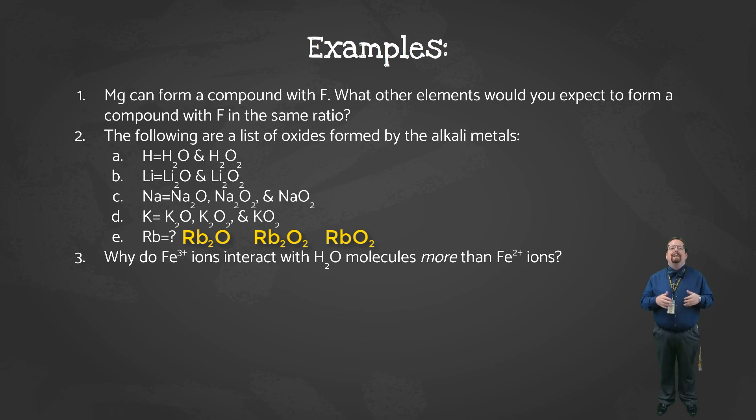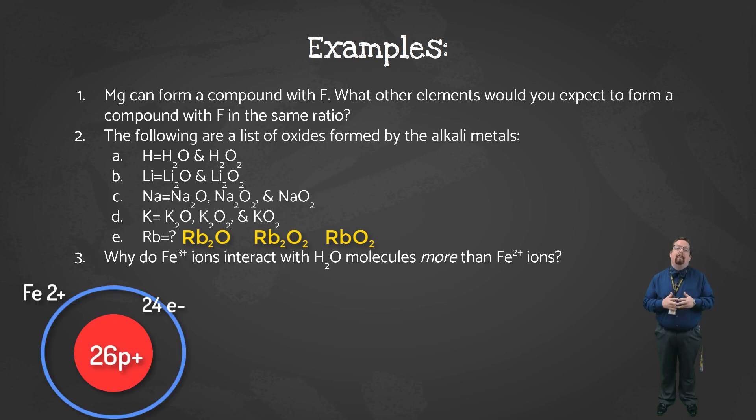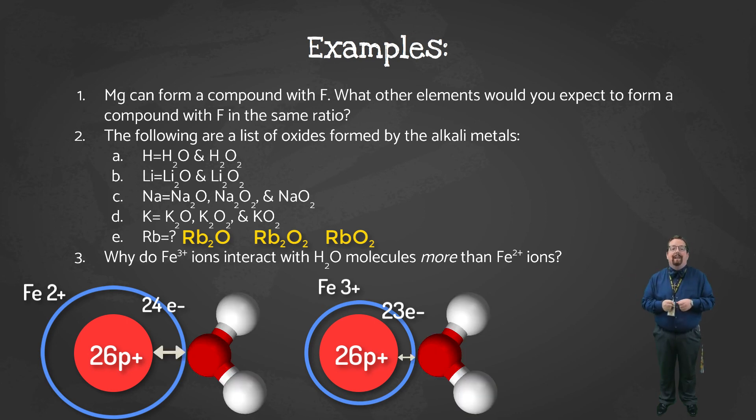Our last question asks, why do Fe3+ ions interact with water molecules more than Fe2+ ions? Almost everything comes down to the size of the atom or ion. So which is bigger, Fe3+ or Fe2+? Remember, as we lose electrons, the effective nuclear charge increases, so the electron cloud gets pulled in tighter, making the ion smaller than the atom it came from before. With that in mind, Fe3+ should have a smaller ionic radius than Fe2+. This means that the valence electrons in a water molecule will be able to get closer to the nucleus of an Fe3+ than an Fe2+ ion. If you can explain it that way, or some similar way, you should be good to go.